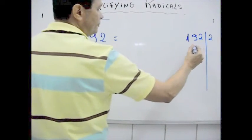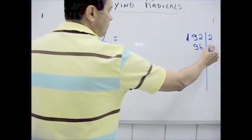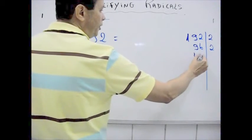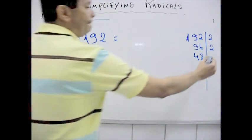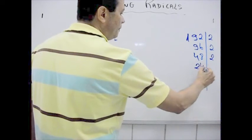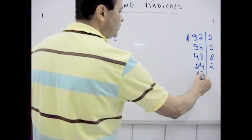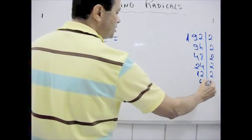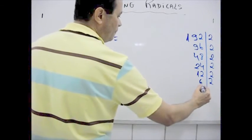Divided by 2 is 96, by 2 is 48, by 2 is 24, by 2 is 12, by 2 is 6, by 2 is 3.